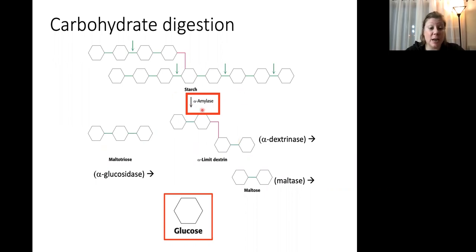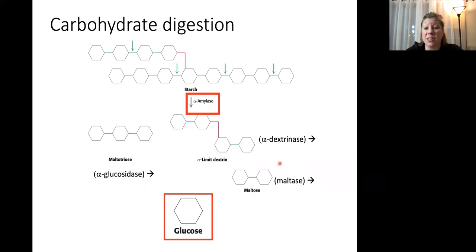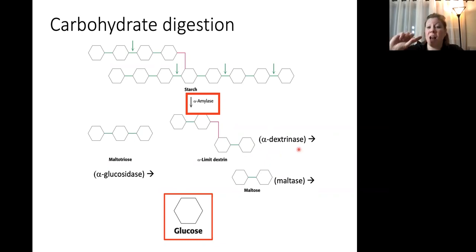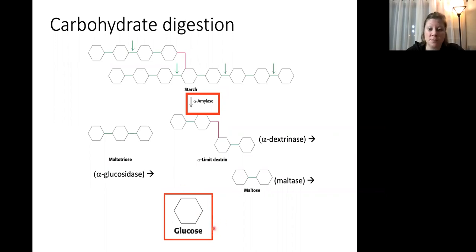Alpha amylase is the first step in breaking down these long chains of glucose, but we don't get many single glucose molecules right away. Additional enzymes are important: alpha glucosidase can break down trimers like maltotriose; maltase breaks maltose into single glucose molecules. Where starch branches, we get an alpha limit dextrin with a 1-6 glycosidic bond, requiring alpha dextrinase to break that 1-6 bond. All these enzymes together produce single glucose molecules from starch.